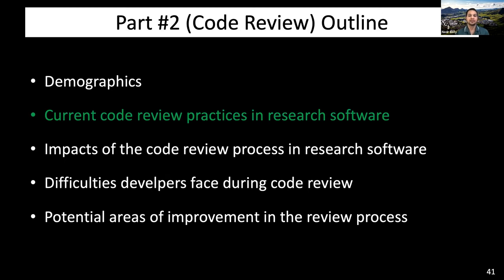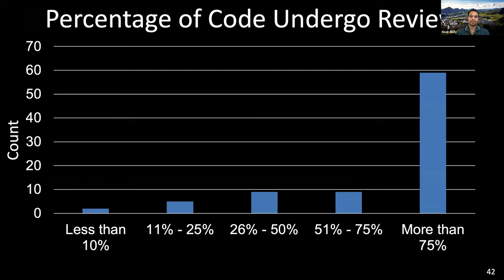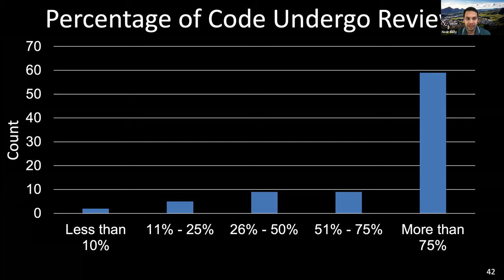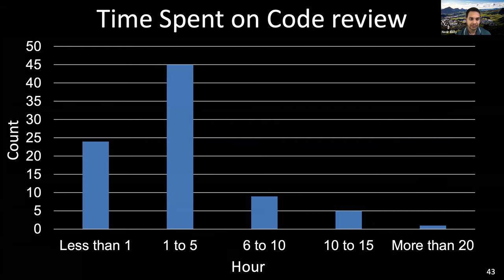How do research software developers perform code review? Survey responses show that in the projects represented by respondents, more than 75% of code undergoes peer review. In larger open-source research software projects, only core developers perform code review, while in smaller projects, almost all developers perform code review — which makes sense as participants in smaller projects take on more tasks. Most respondents spend one to five hours per week on code review, and an additional one third spent less than one hour per week. Still fewer respondents spend more than five hours per week.